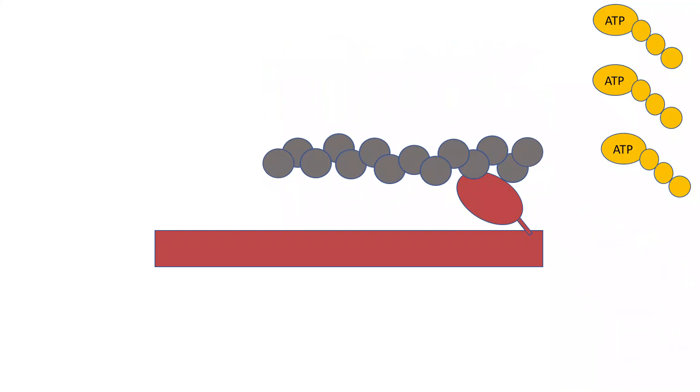If ATP levels become severely depleted as would occur during death, myosin and actin will remain in the attached state, leading to sustained skeletal muscle contractions. This condition is referred to as rigor mortis.